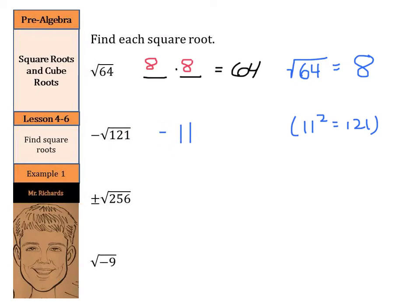We can follow the same logic with this plus or minus sign with the square root of 256. What number multiplied by itself is 256? Well, that is 16, since 16 squared equals 256. Now, just like we waited to the end to put the negative sign on with the 11, we can now put the plus or minus sign on with the 16.